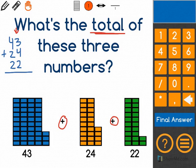So first I'm going to add 3 plus 4, and that makes 7, and then I add 7 plus 2, and that makes 9.